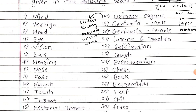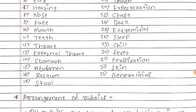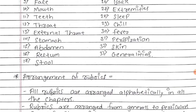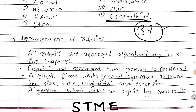Continuing the chapter order: 19th Genitalia Male, 20th Genitalia Female, 21st Larynx and Trachea, 22nd Respiration, 23rd Cough, 24th Expectoration, 25th Chest, 26th Back, 27th Extremities, 28th Sleep, 29th Chill, 30th Fever, 31st Perspiration, 32nd Skin, and 33rd — the last chapter — Generalities. So we have covered all 33 chapters, totaling 37 chapters in Kent's Repertory.